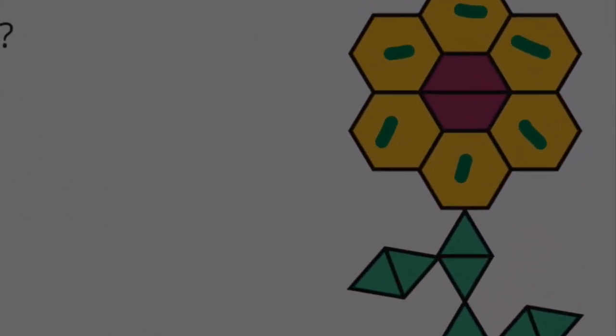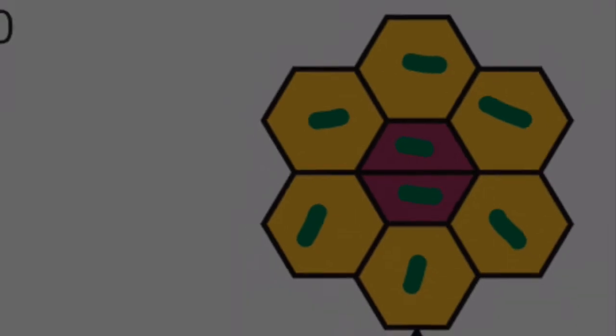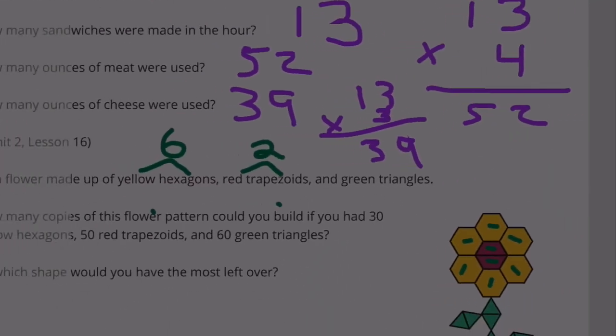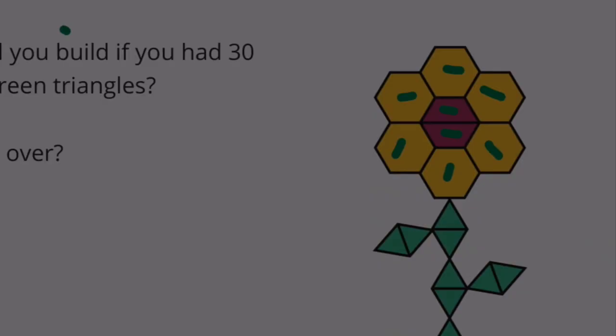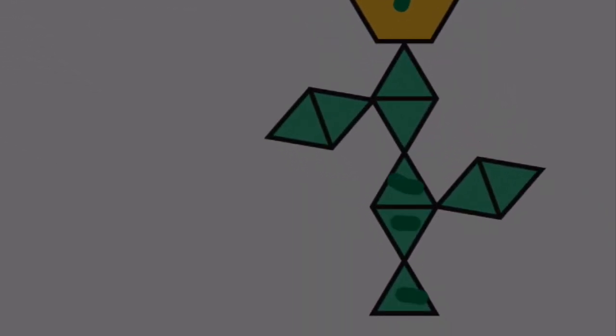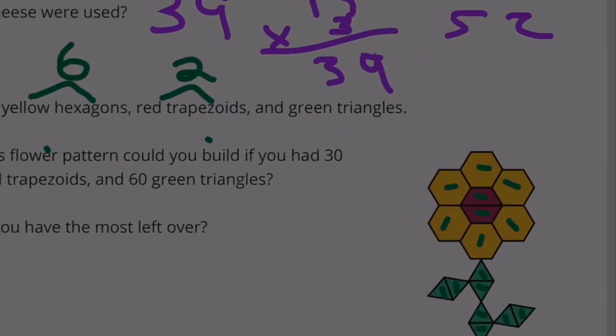Let's count the red trapezoids: 1, 2. You need 2 red trapezoids to make 1 flower. And then let's count these little green triangles: 1, 2, 3, 4, 5, 6, 7, 8, 9. We need 9 of those.